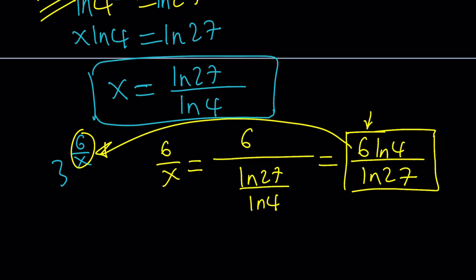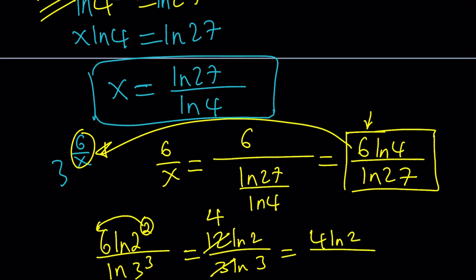In these cases, it's going to be helpful if you use prime numbers. Let's write the ln 4 as ln 2 squared and the ln 27 as ln 3 cubed. Now we can write this in simplest form. 6 times 2 is 12 ln 2 divided by 3 ln 3. When the 3 goes into 12, 4 times you end up with 4 ln 2 over ln 3.